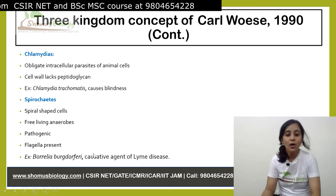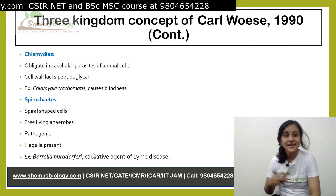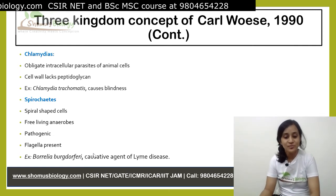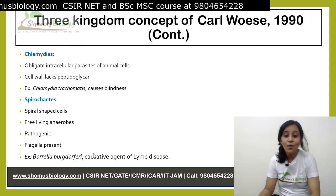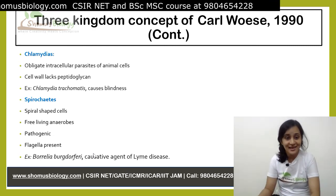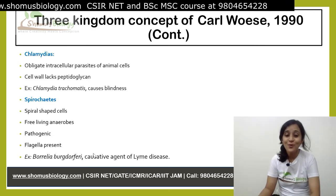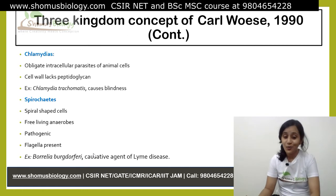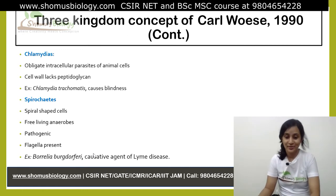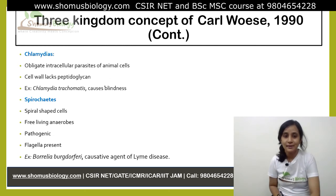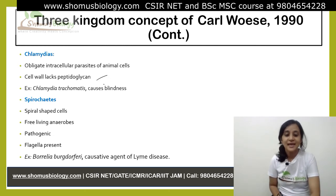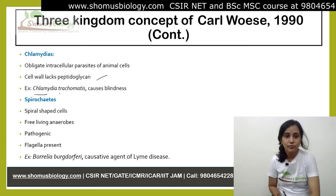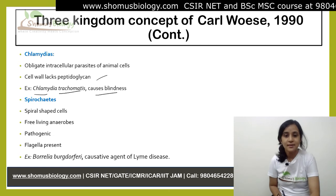Chlamydiae. All members of this group are obligate intracellular parasites of animal cells — meaning they are organisms that cannot complete their life cycle without exploiting a suitable host. If an obligate parasite cannot obtain a host, it will fail to reproduce. Their cell wall lacks peptidoglycan. An example is Chlamydia trachomatis, which causes blindness.